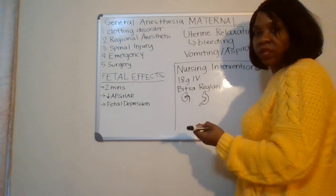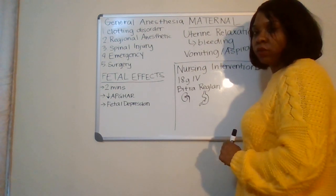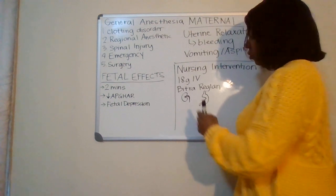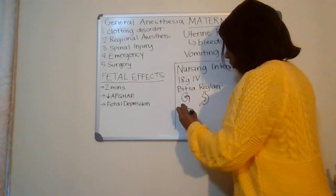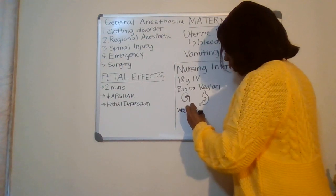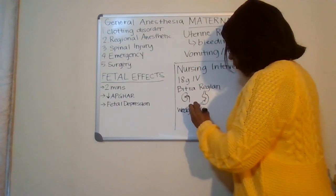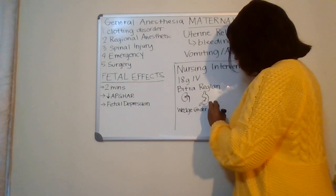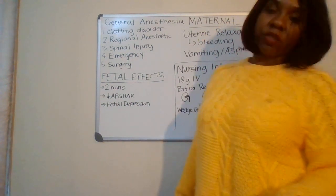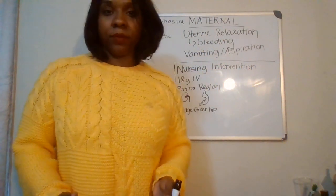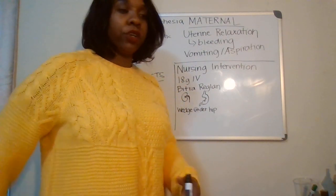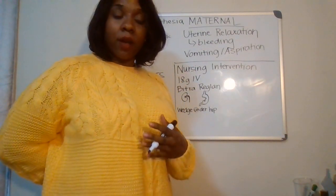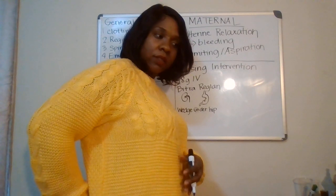Because we already know that general anesthesia causes a drop in oxygen for the baby and the mom, we're going to make sure she has a wedge underneath her hip. That wedge helps deliver oxygen to the baby. When a pregnant woman is under general anesthetic she's on her back, and the baby is putting all this pressure on her abdominal aorta. If we put a small pillow to tilt her so the baby shifts more to the side, that pressure won't happen.